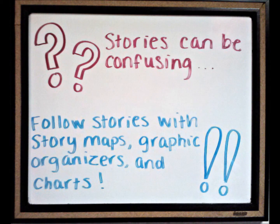Stories can be confusing, especially when there are many characters, plot lines, and conflicts, but there are many ways readers can follow the events in a story. My students will practice identifying the five basic elements of a story through story mapping, graphic organizers, and charts during class reading activities to enable them to have a better grasp of reading comprehension.